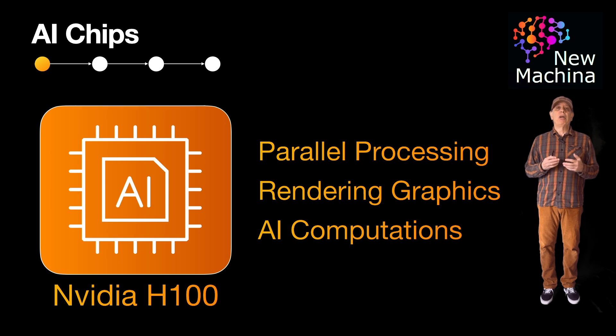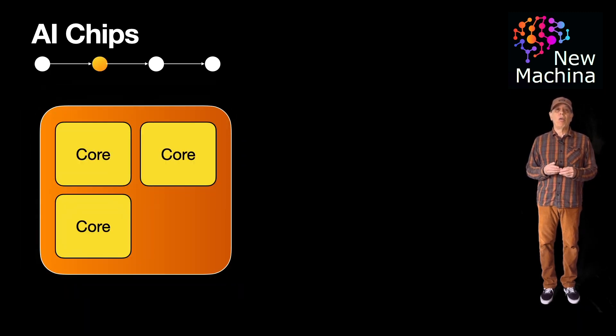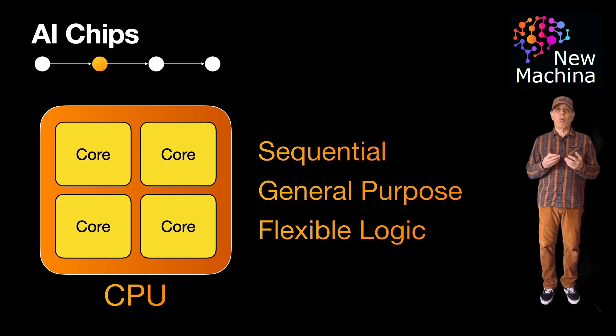So how is the GPU different from a CPU or central processing unit? Well, a CPU is optimized for sequential general-purpose tasks, enabling it to excel at flexible logic, but with far fewer cores.